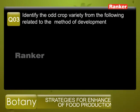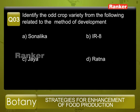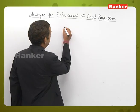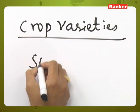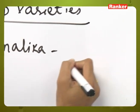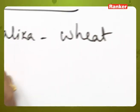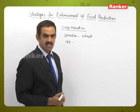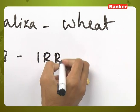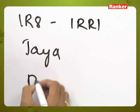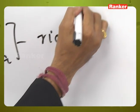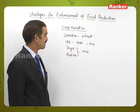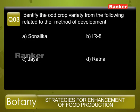Question number three: identify the odd crop variety from the following related to the method — options are: a) Sonalika, b) IR8, c) Jaya, and d) Ratna. Sonalika is a semi-dwarf wheat variety introduced to India. IR8 is a rice variety developed at the International Rice Research Institute in the Philippines. Jaya and Ratna are semi-dwarf varieties of rice developed in India. The odd one is Sonalika (wheat), so option a is correct.